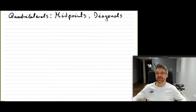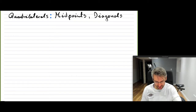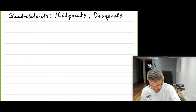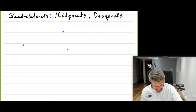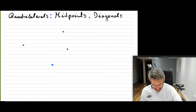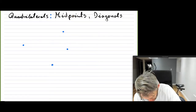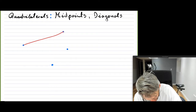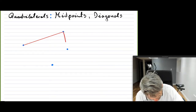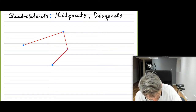Let's take a quadrilateral and draw a random one. I'll scatter the points — there it is — and connect them to make the vertices of our quadrilateral.